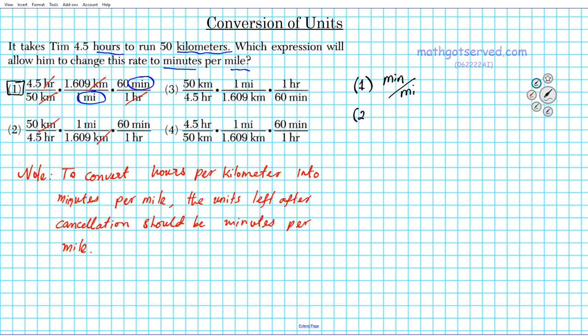For option two, the resulting unit here will be mile minutes per hour squared. That doesn't make any sense. That's not what we want. What we want is minutes per mile.